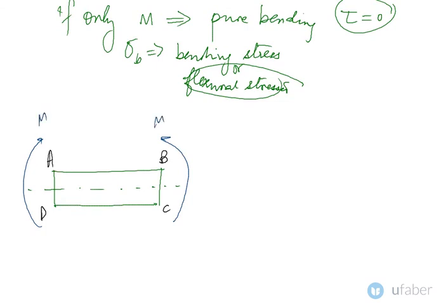What happens? It bends as we discussed in the diagram above. If you observe what is happening, this layer, layer AB, has now become curved and layer DC has now also become curved. If I draw it as a separate diagram, this would become something like this.